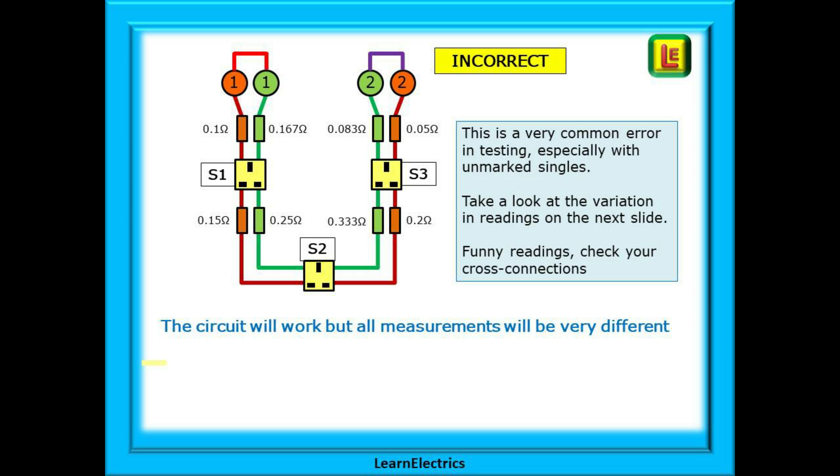This is a very common error in testing, especially with unmarked singles. Take a look at the variation in readings on the next slide. If you get funny readings when testing, always check your cross connections. You will be surprised how often testing problems are actually self-inflicted errors. Again, when we remove the links and reinstate the circuit, everything will work correctly. There is nothing wrong with the circuit, just our testing method.